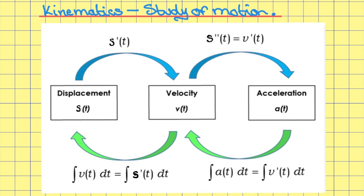In this video we're going to look at the study of kinematics. Kinematics is just the study of motion. We have three distinct parts in kinematics: displacement, denoted by s with respect to t; velocity, which is v with respect to t; and acceleration, which is a with respect to t. If you differentiate displacement it will take you to velocity, if you differentiate velocity it will give you acceleration. If you go the other way, if you integrate acceleration it will take you to velocity, and if you integrate velocity you will get back to displacement.